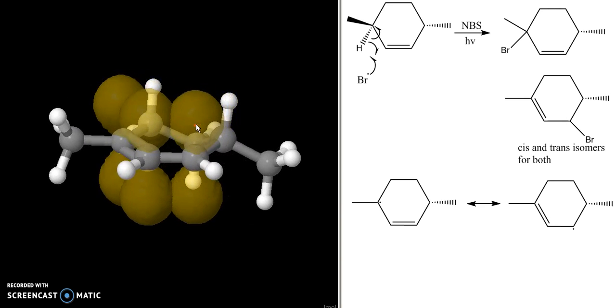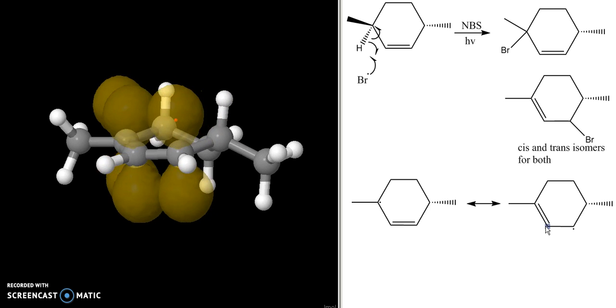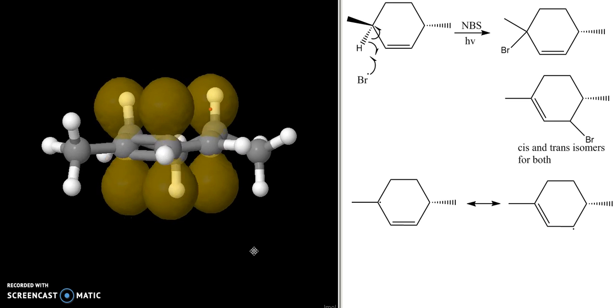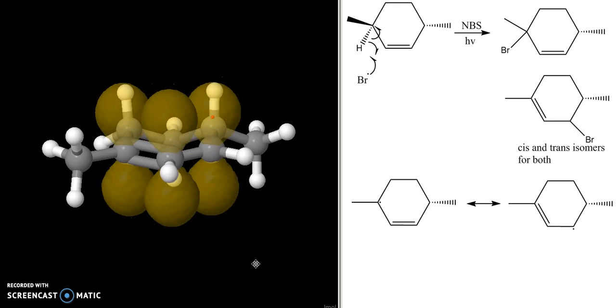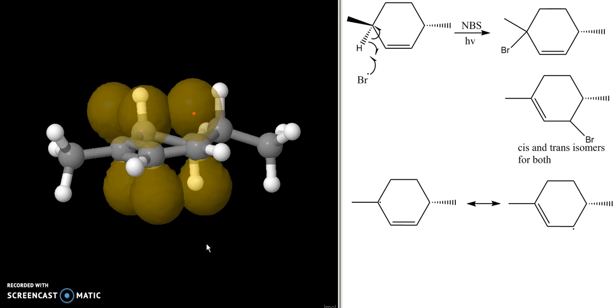We have the radical on the other carbon and the double bond between these two carbons now, which is exactly what's shown here. Now, the important thing to keep in mind is that since either of these radicals is completely planar, the Br group can attack from either the top or the bottom.